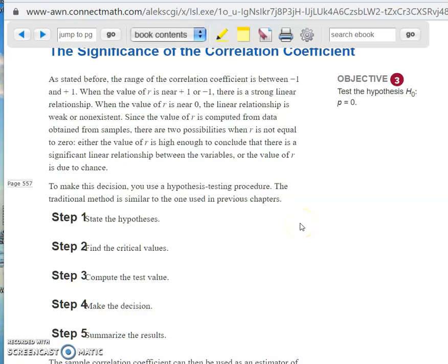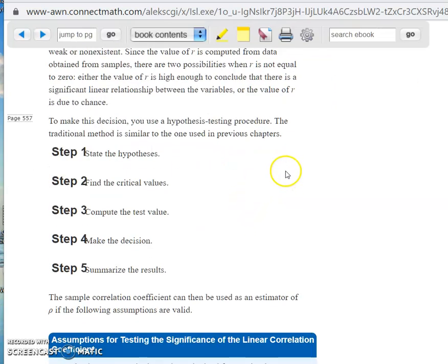So as he says, you get the data from the samples. There's always two possibilities. If it's not exactly equal to 1, not exactly equal to negative 1. Is the value of R high enough to conclude that there is a significant linear relationship between the variables? Or is it just kind of random chance? These things just happen in life.